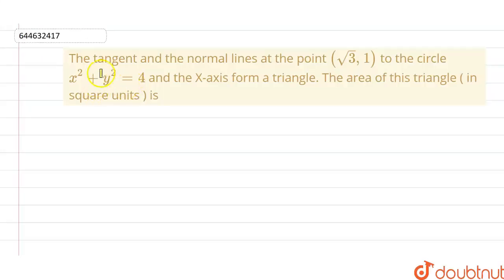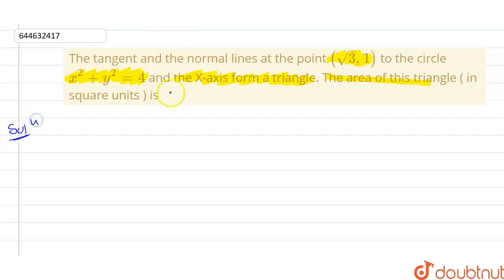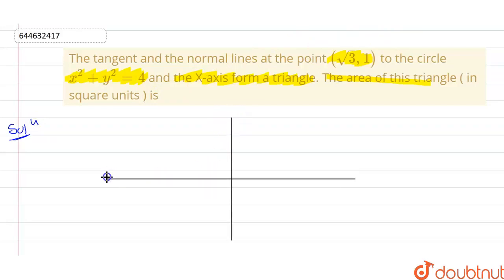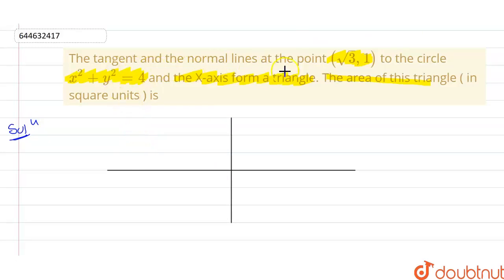The given question is: the tangent and the normal lines at the point (√3, 1) to the circle x² + y² = 4 and the x-axis form a triangle. I have to find the area of this triangle in square units.